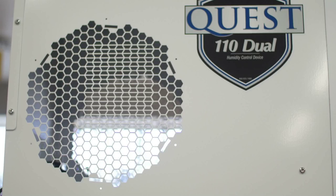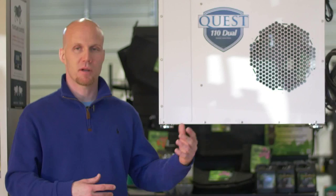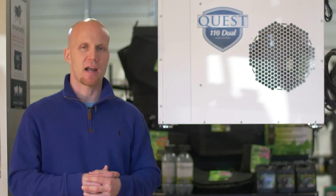The Quest Dual 110 also has dual airflow. That's where it gets the name dual from. Dual airflow is beneficial because it supplies dry air out both sides of the unit, allowing you to have more balance in your room. Also, by hanging a dehumidifier, you keep the heat off the plants. With dehumidifiers, you're naturally going to have some amount of heat coming out of them—that's just a by-product of dehumidification.